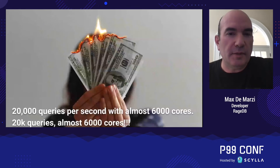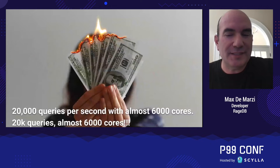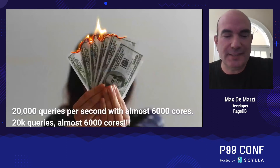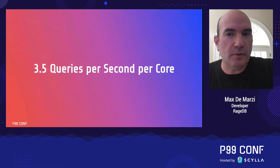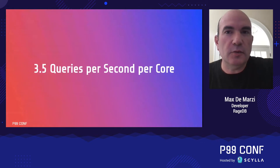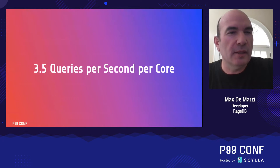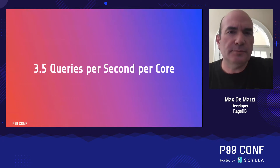Now think about that: 20,000 queries per second with almost 6,000 cores. That's three and a half queries per second per core, if you do the math. That is outrageously bad performance.